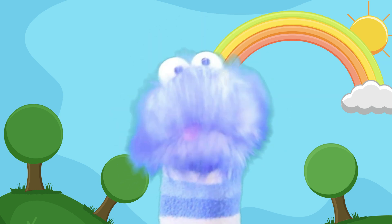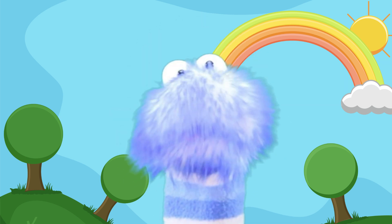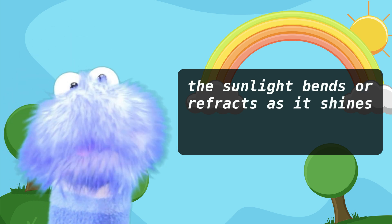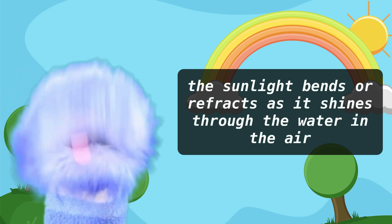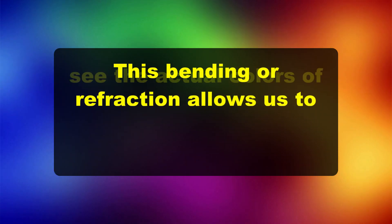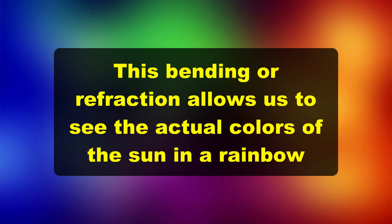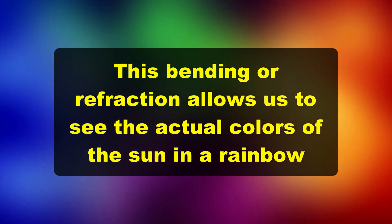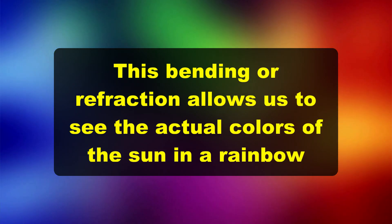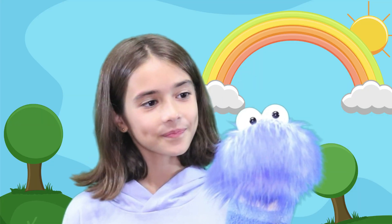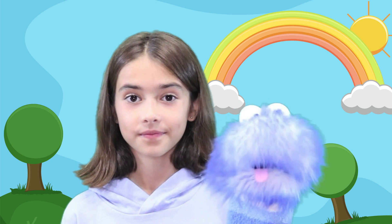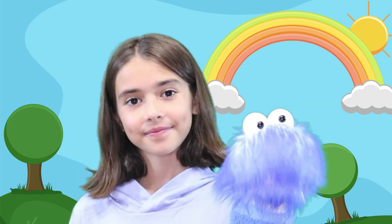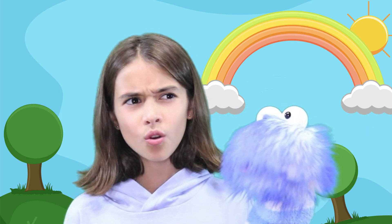But if the rain is falling, or immediately after the rain stops and the Sun is shining, the sunlight bends or refracts as it shines through the water in the air. This bending, or refraction, allows us to see the actual colors of the Sun in a rainbow. But we cannot see the rainbow unless we are somewhere between the Sun and the rain.